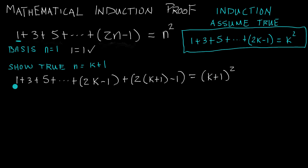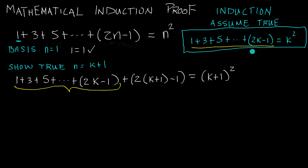Now, this portion — 1 plus 3 plus 5 up to 2k minus 1 — equals the left hand side of the assumption we made in our induction step. Since we're assuming this is true, meaning the left hand side equals the right hand side, we can replace all of that with k squared.